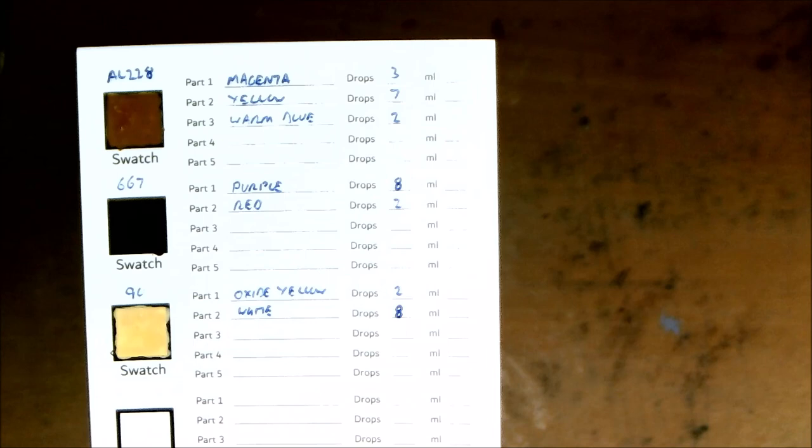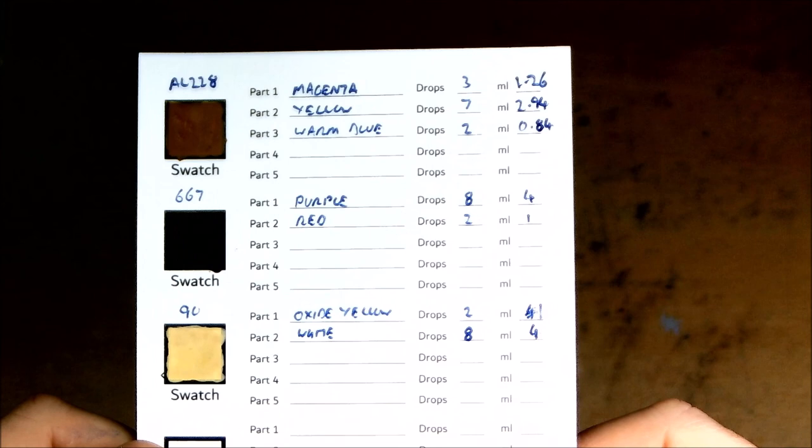Since this is a color we'll only be using for trims and icons, we'll only need five-milliliter bottles of it, but the converter will work for any size bottle if you prefer to source your own. Following the instructions on the calculator, we've written down how many milliliters of each color we'll need to replicate the colors that we made up earlier on the palette.